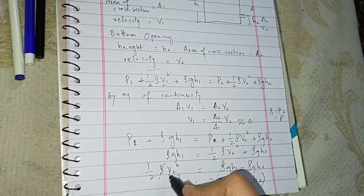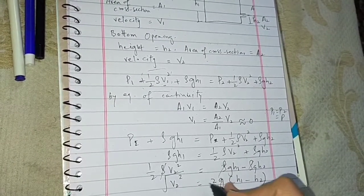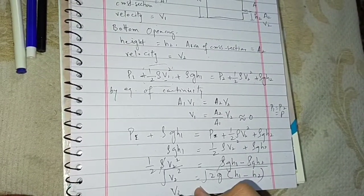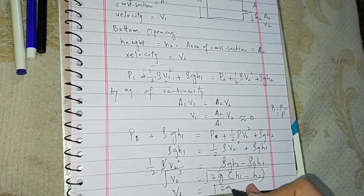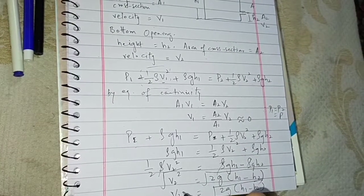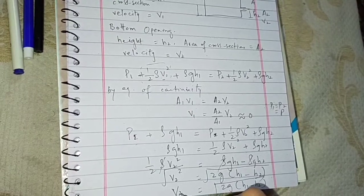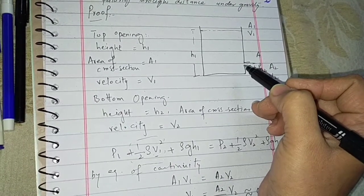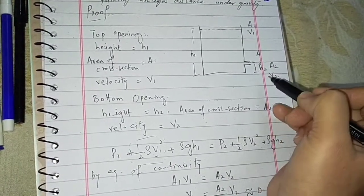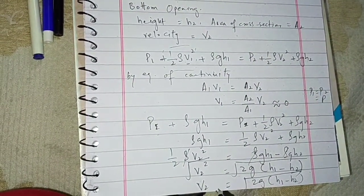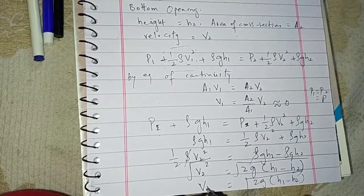Taking the square root on both sides, the final answer is V2 equals the square root of 2g(H1 minus H2). This is the speed of efflux — the speed of the fluid moving out from the hole A. This is the final equation of Torricelli's theorem, relating the speed of efflux to the height through which the fluid falls.